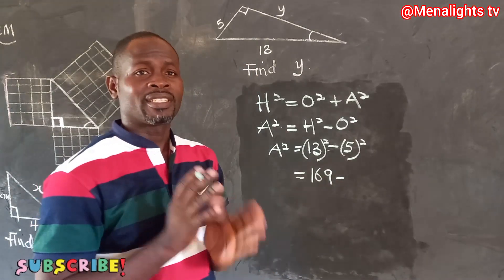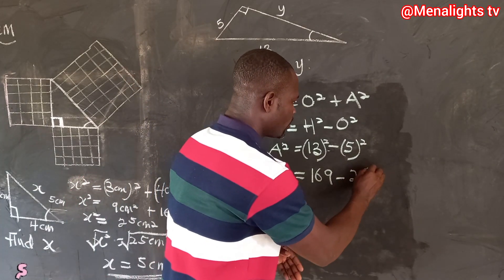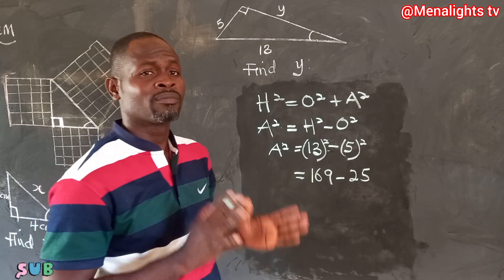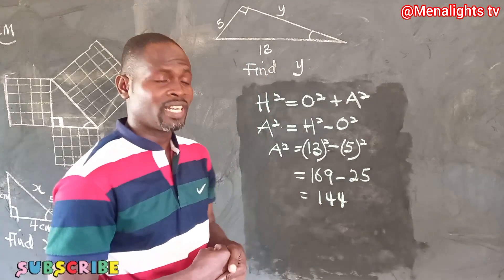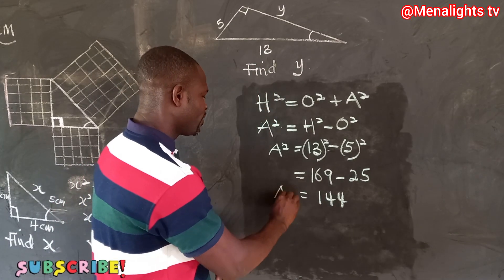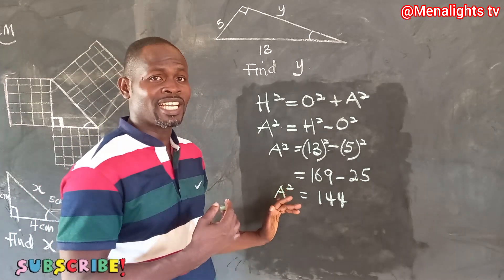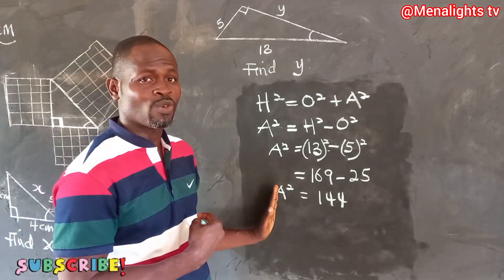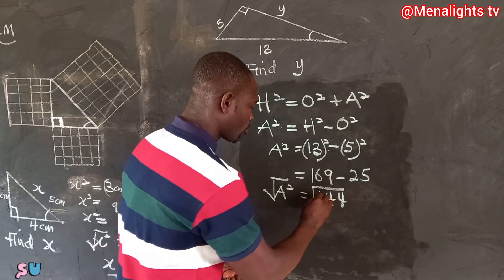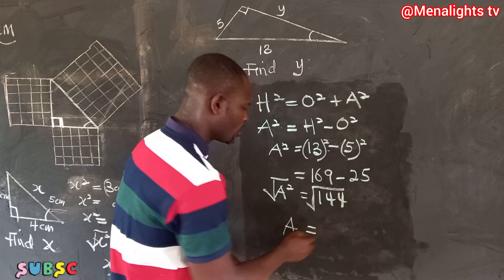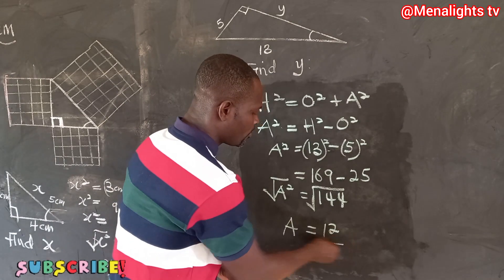And 5 squared is 5 times 5, which equals 25. When you take 25 from 169 you get 144, so the adjacent squared equals 144. To find the adjacent alone, we take the square root of 144, which means our adjacent is 12.